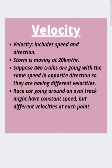Velocity includes speed and direction — you may say velocity is a type of directed speed. For example, a storm moving at 20 km per hour has a velocity because it moves in one direction. Suppose two trains are going with the same speed in opposite directions — they have different velocities. A race car going around a track might have constant speed but different velocities at each point.